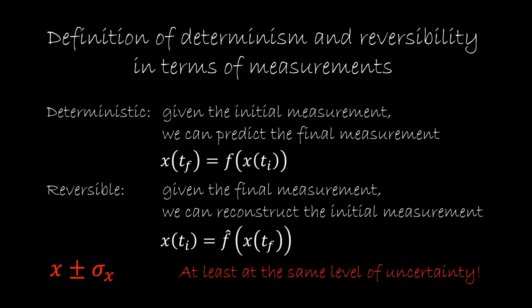What we're going to require is that we can reconstruct the initial measurement and predict the final measurement, but we have to do it at least at the same level of uncertainty. Let's see how that works in the simple case of a single measurement.